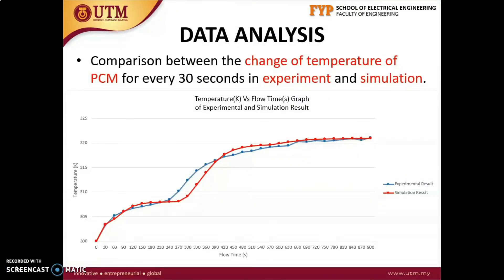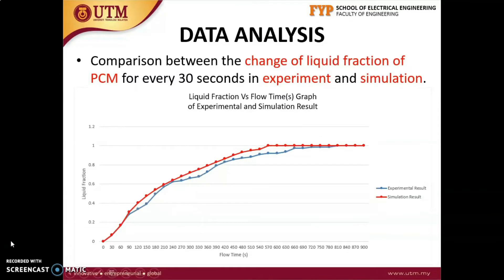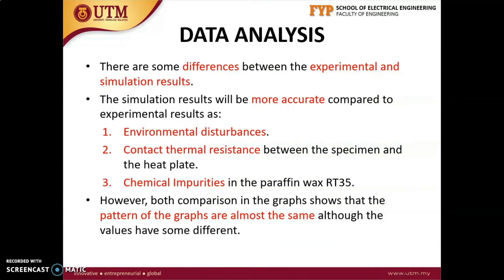This is the comparison between the change of temperature of PCM for every 30 seconds in experiment and simulation. Next, this is the comparison between the change of liquid fraction of PCM for every 30 seconds in experiment and simulation. The simulation and experimental results show great agreement. Slight variation shown might be caused by some environmental disturbance that made the experimental results less accurate. For example, the experiment was carried out in an air-conditioned room, so the heat applied to the PCM specimen will be less than 333 Kelvin and drops the accuracy of its results.